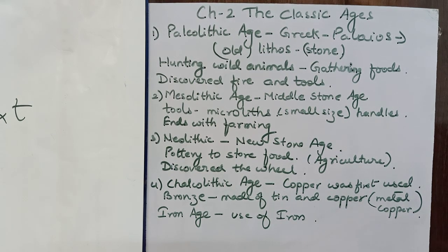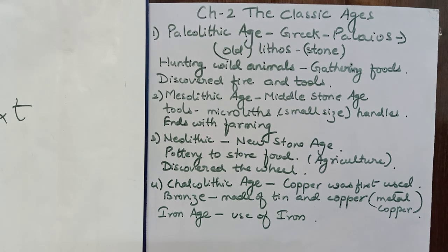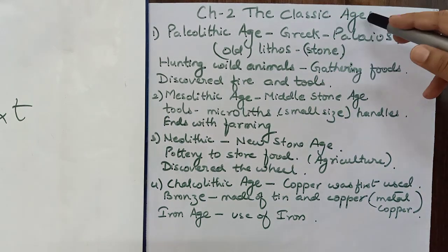The classical ages. As in that chapter, we told you how man changed and developed into a human being. Now here we are talking about what the people of that age used to do and how they made their food, how they discovered food, and how they developed. This earlier age was known as classic ages.